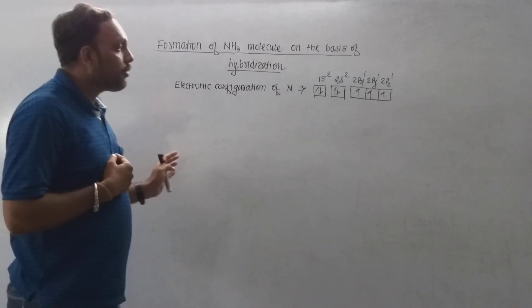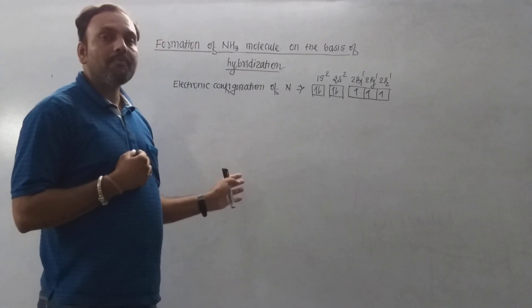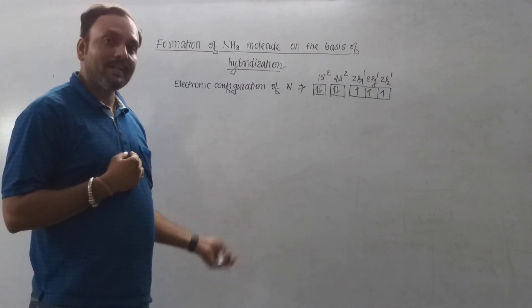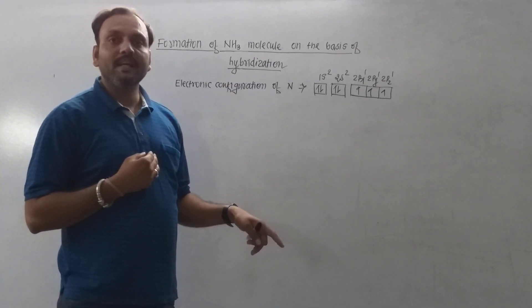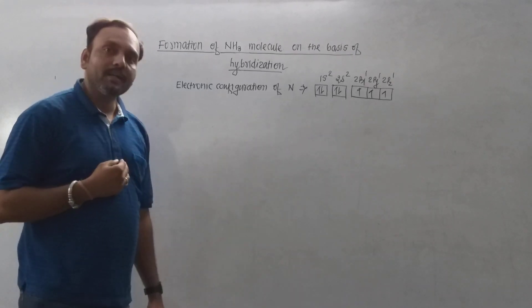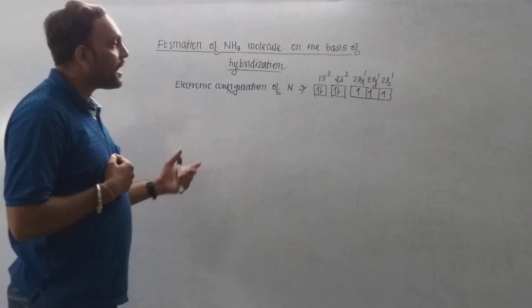In this case, nitrogen does not have any vacant higher energy orbital in the valence shell. Hence, its ground state electronic configuration is considered as excited state electronic configuration.